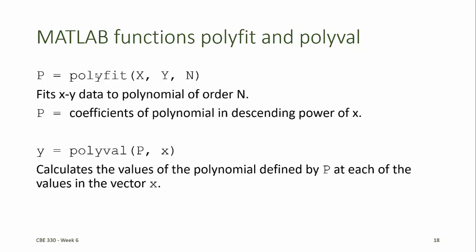That vector contains the unknown coefficients of the polynomial in descending powers of x. So, if n is equal to 3, the vector P will contain four values. The first value will be the coefficient of the x cubed term, the second value will be the coefficient of the x squared term, the third value will be the coefficient of the x term, and the last value will be the constant.